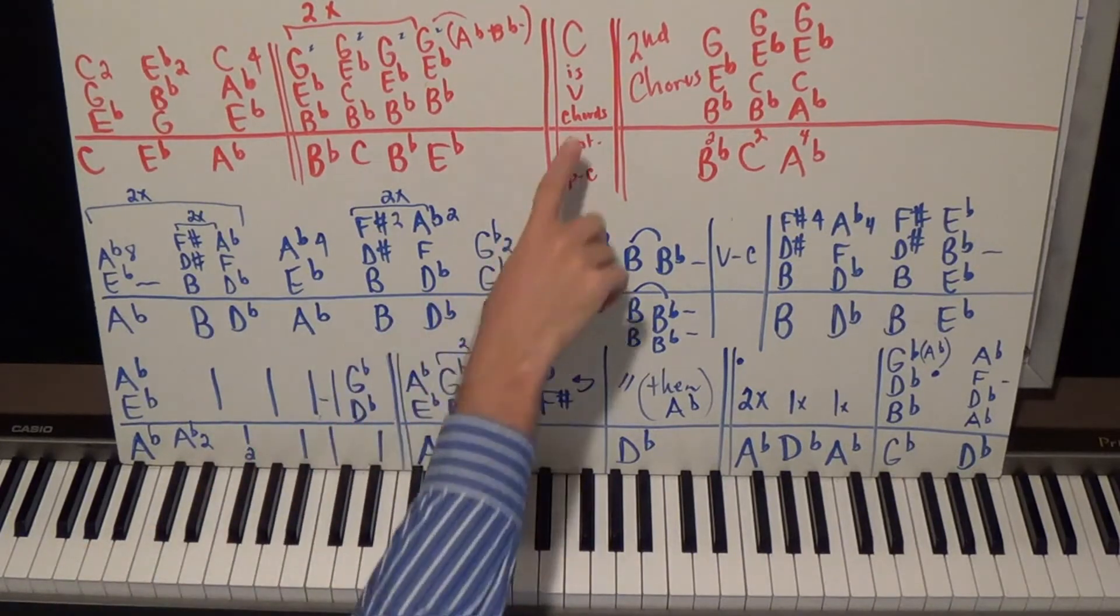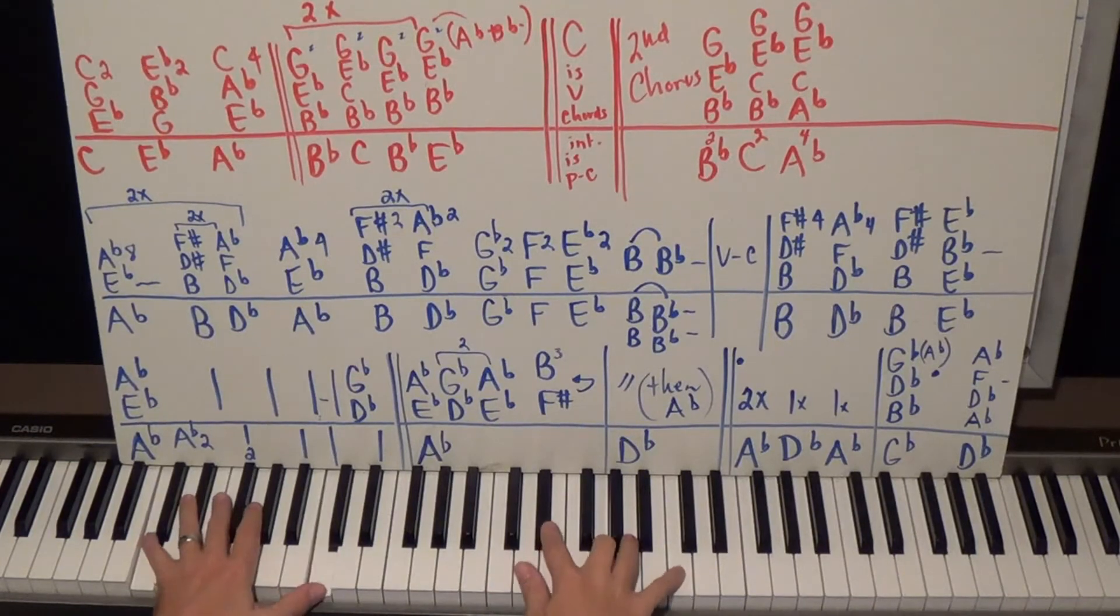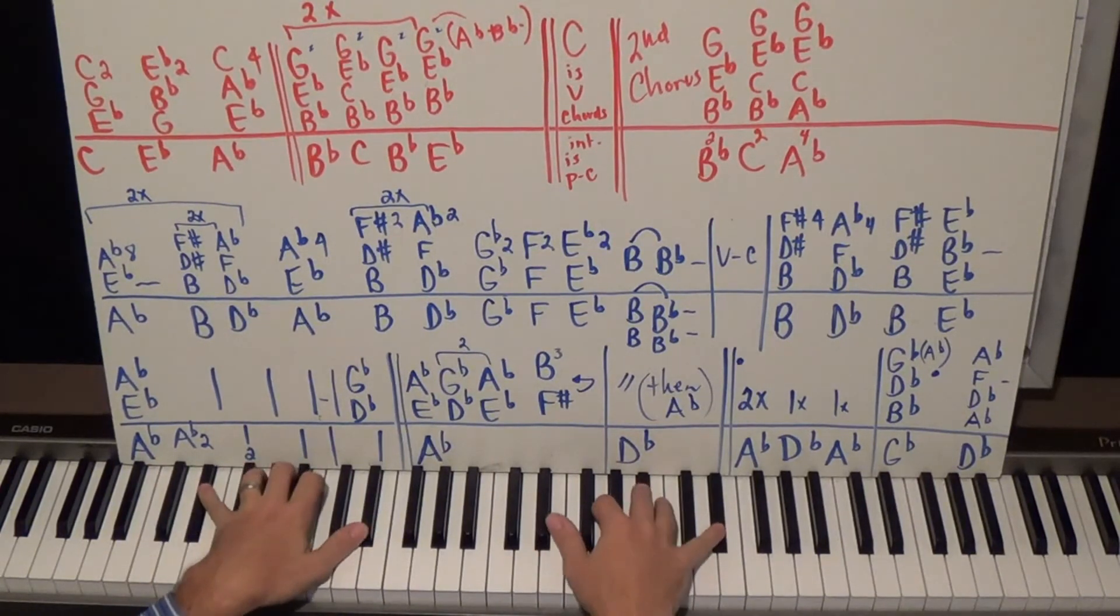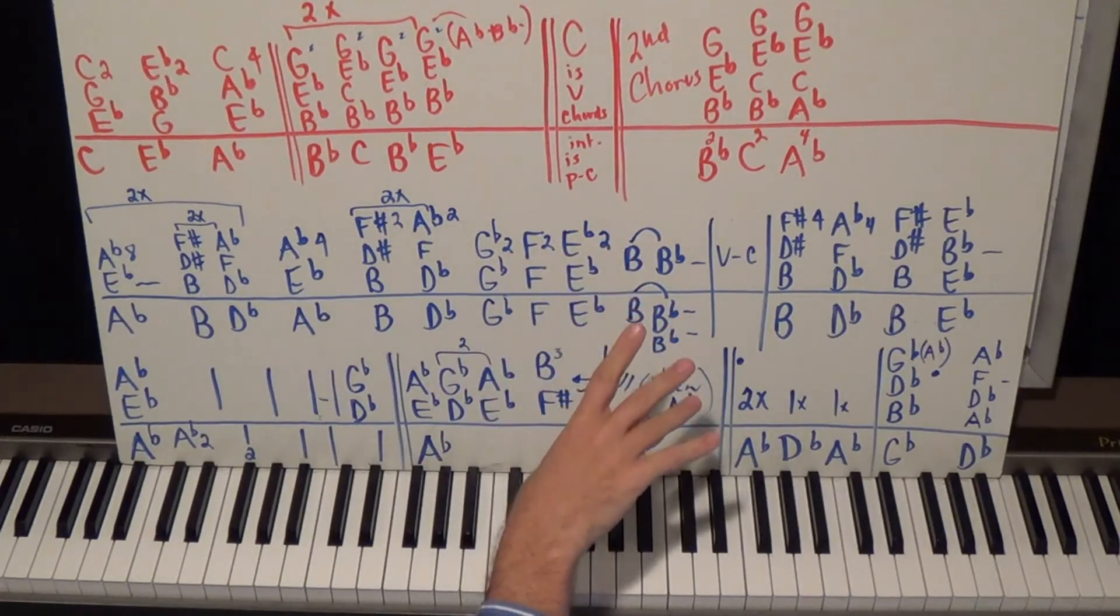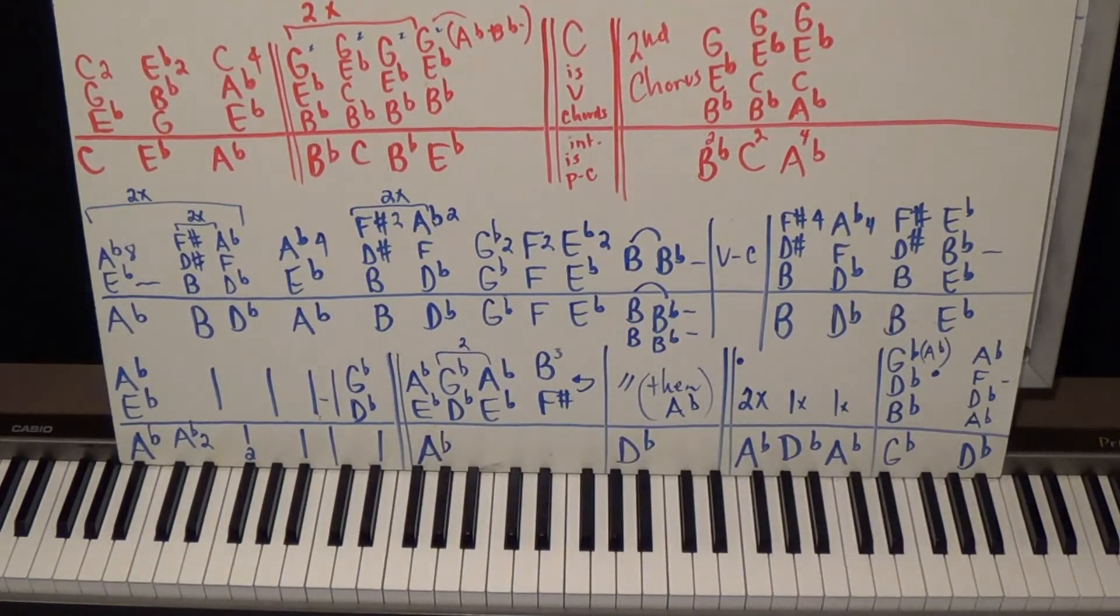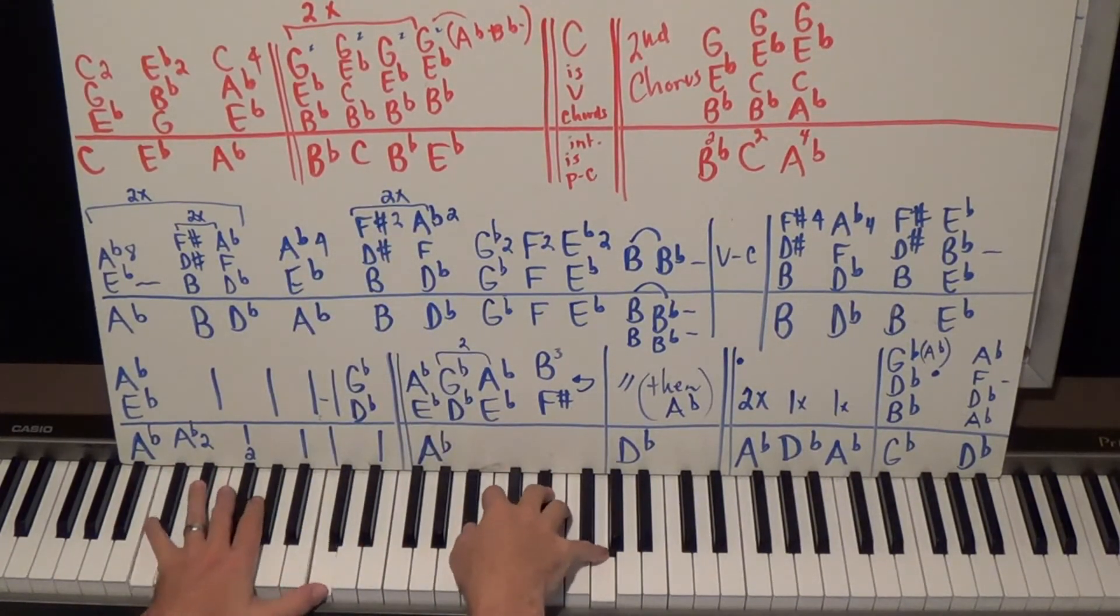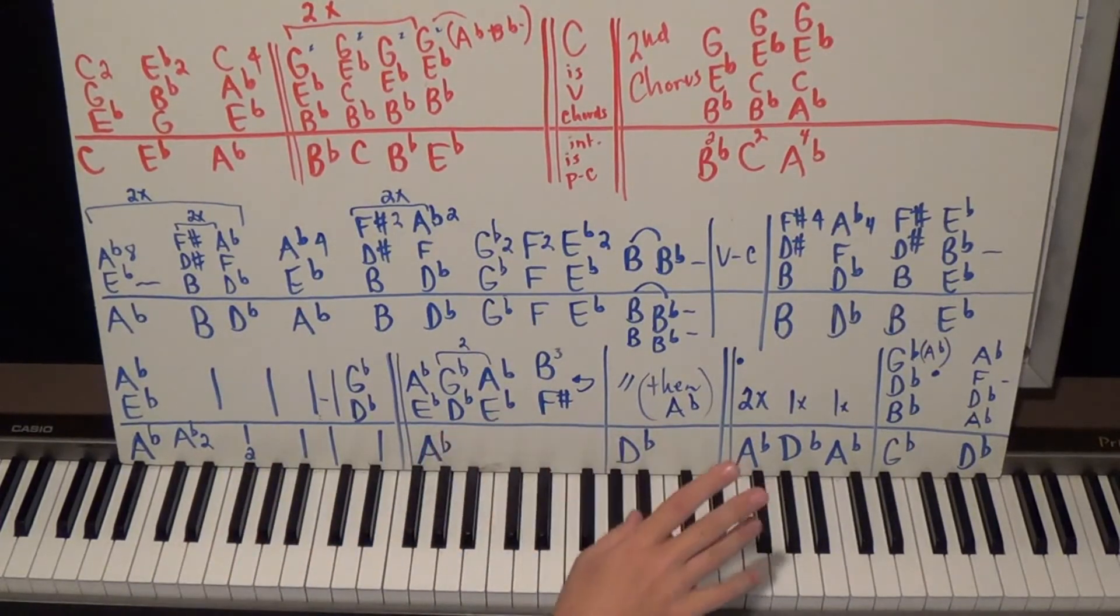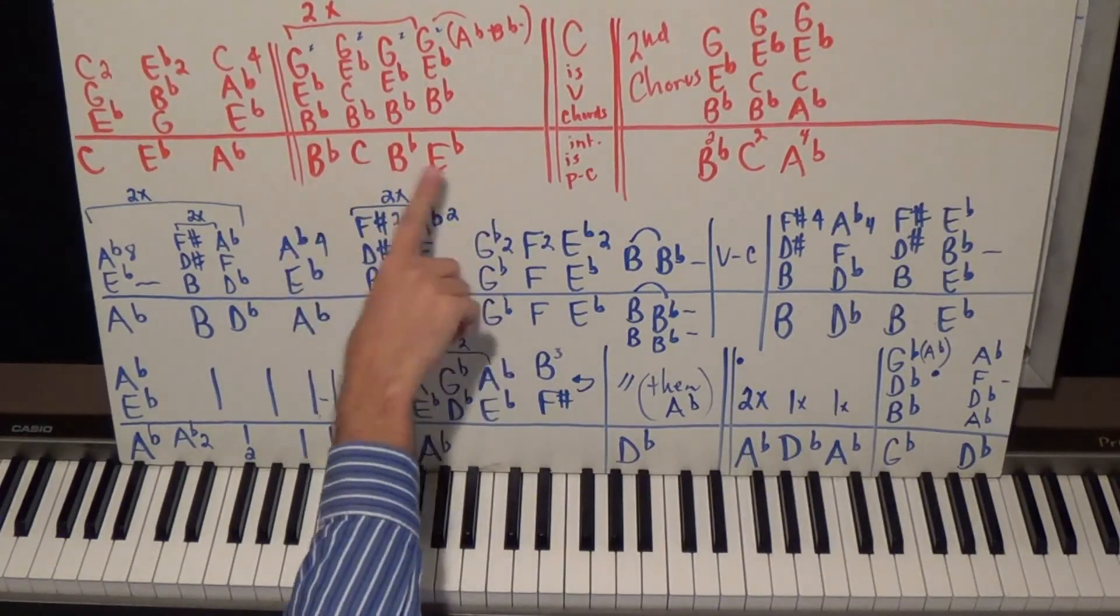All right, so that's the chorus part. It uses the verse chords, so you're just going to play those. Okay, the interlude before you start the next verse is the pre-chorus, this thing right here. Okay, so after that first verse, now for some reason on the second chorus it'll do this a couple of times.